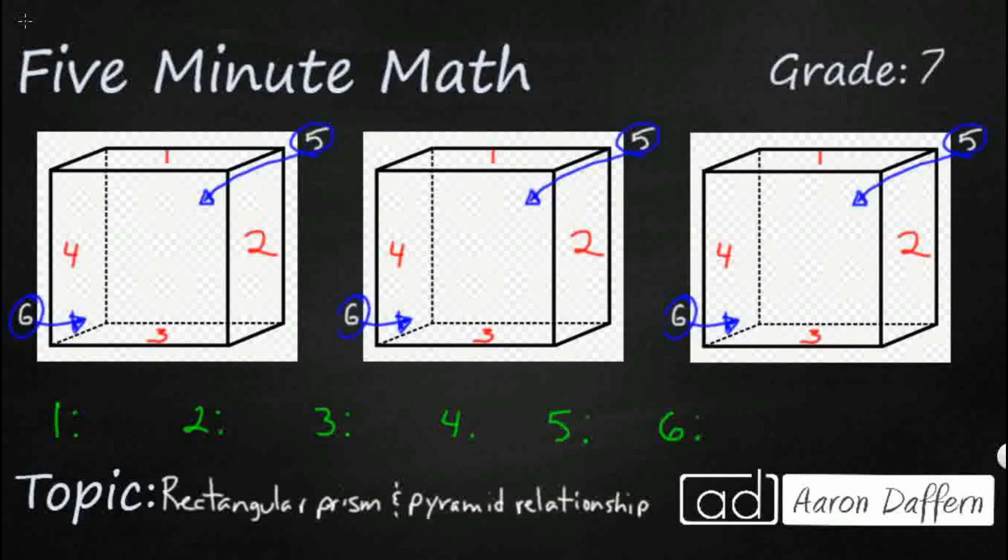So we have some rectangular prisms. They happen to be cubes. Those are special rectangular prisms here and I've multiplied this picture 3 times because we're going to need to do it 3 different times to find the relationship between these two shapes, rectangular prism and pyramid, assuming we have the same base and the same height.